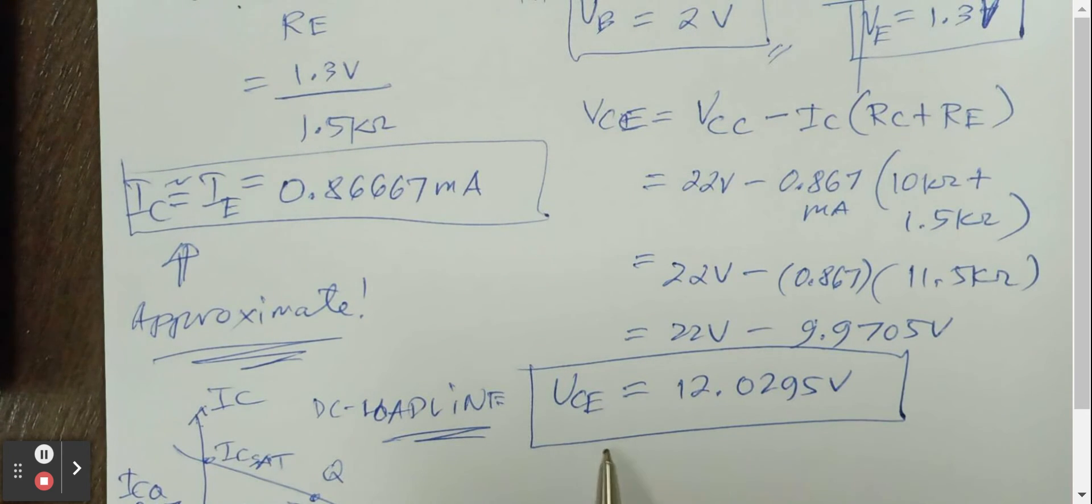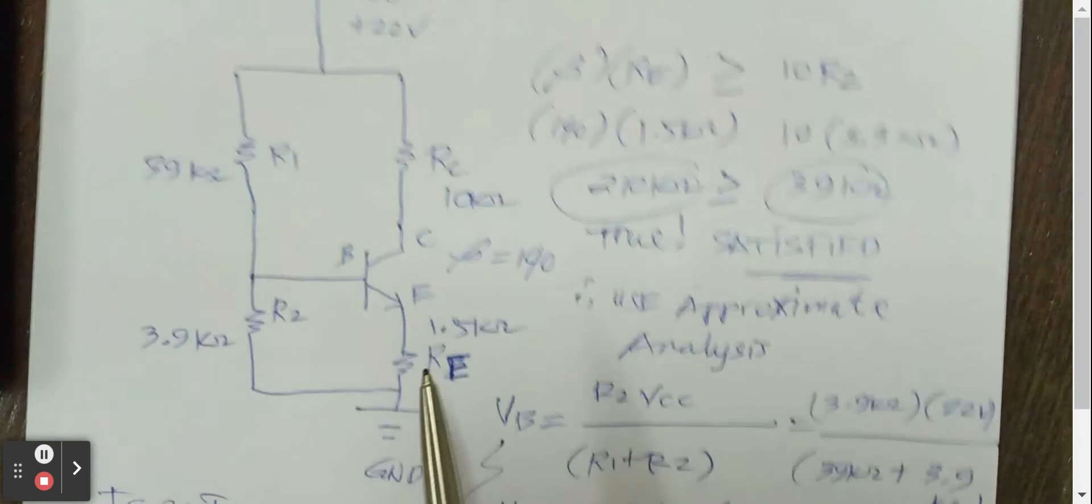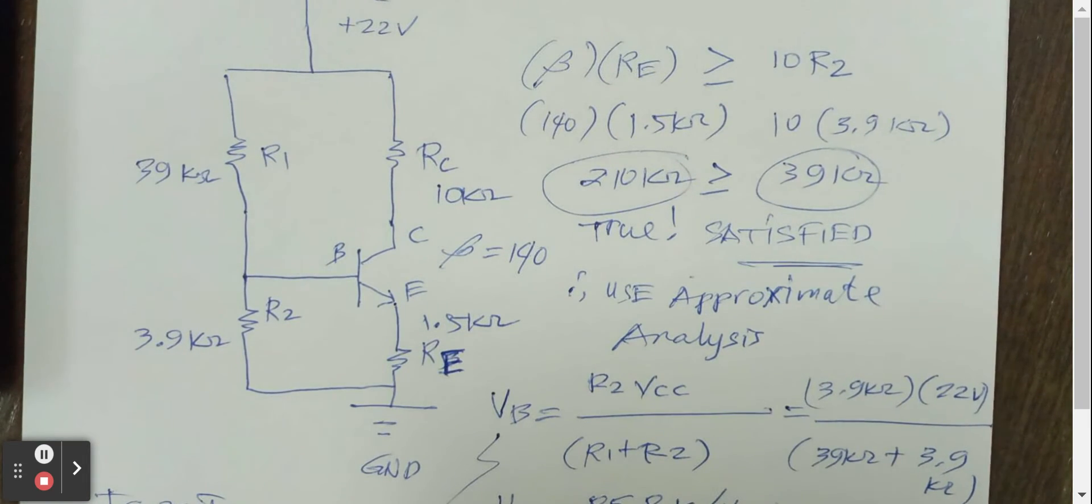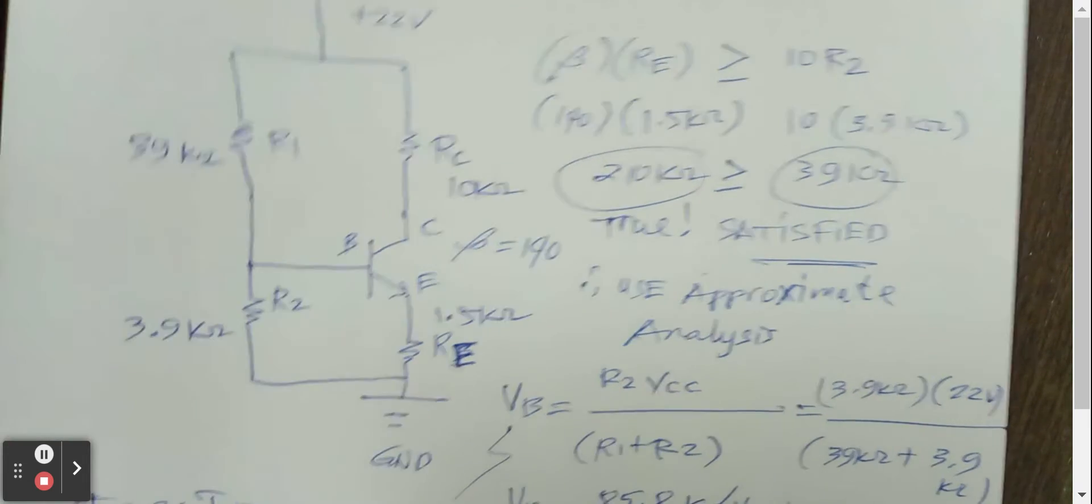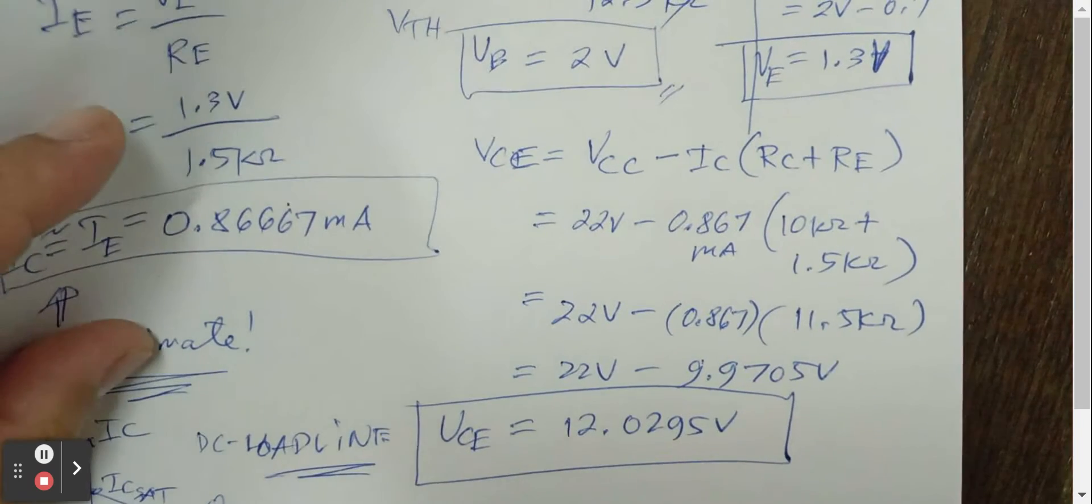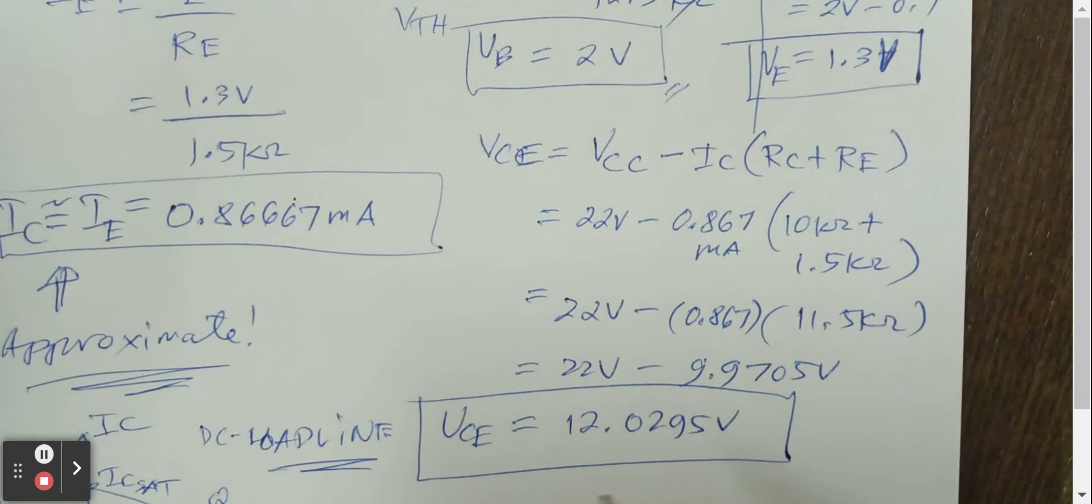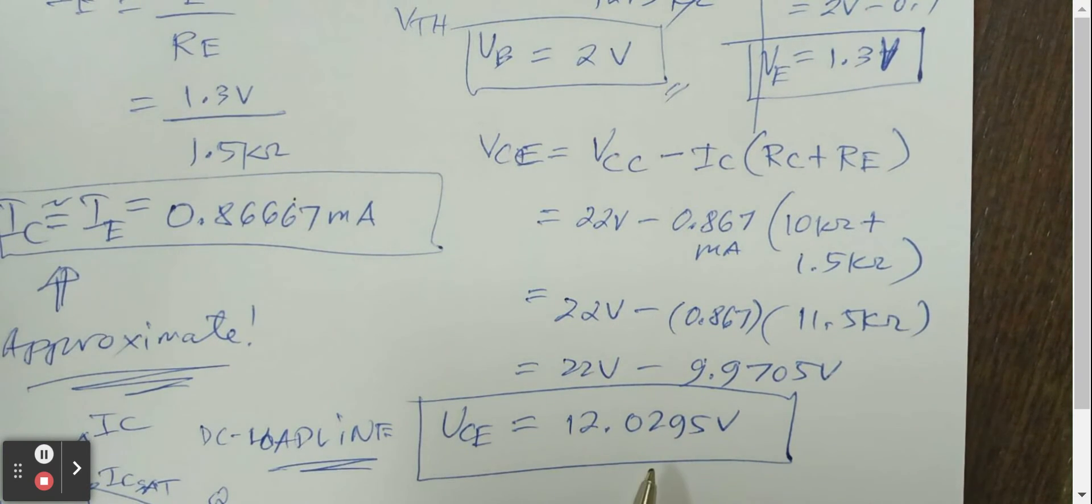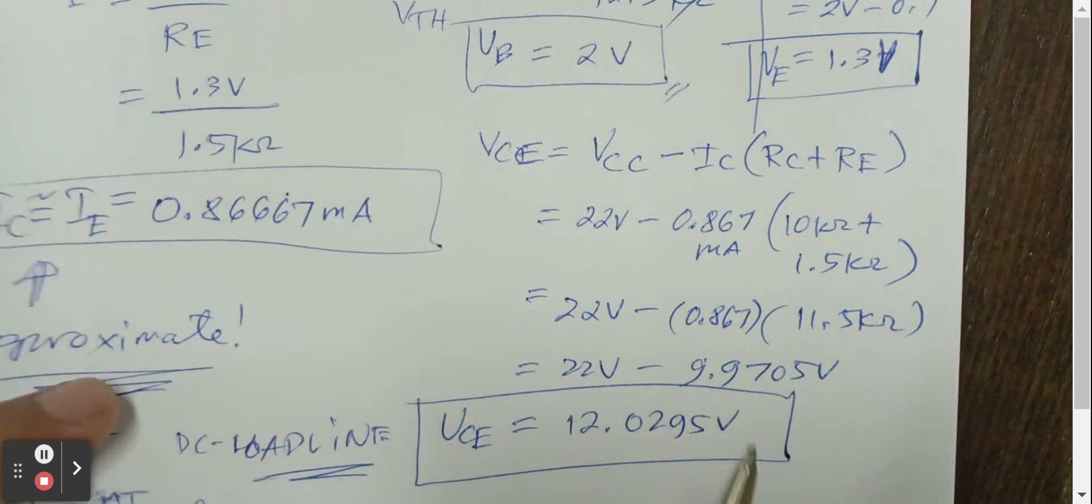In the case of Vce, the answer here in approximate is 12.03. In the exact analysis, if you do the same problem in exact analysis, it will be 12.27. So 12.27 and 12.03 is not really that far from each other. So the Icq and the Vceq are very close for that.